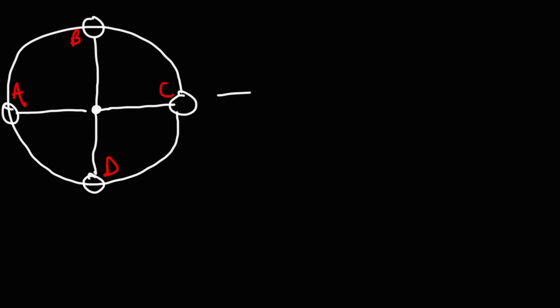Sometimes you may need to calculate the tension of an object moving in circular motion. Let's say you have a ball attached to a rope moving in a vertical circle, and we want to calculate the tension force at points A, B, C, and D. At points A and C — the sides of the circle — the tension force is approximately equal to mv²/r. In those cases, the centripetal force is provided entirely by the tension force in the rope.